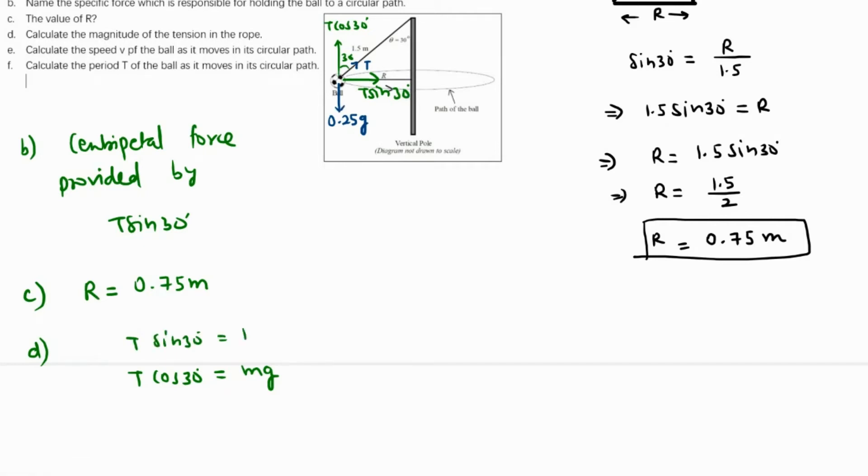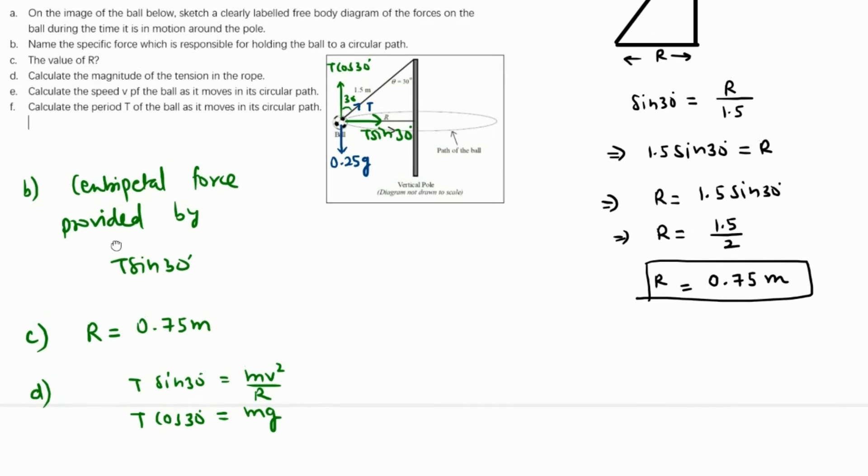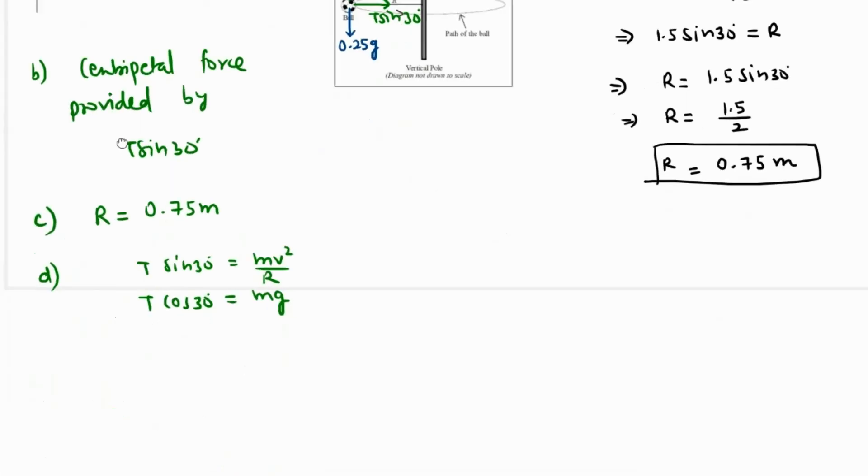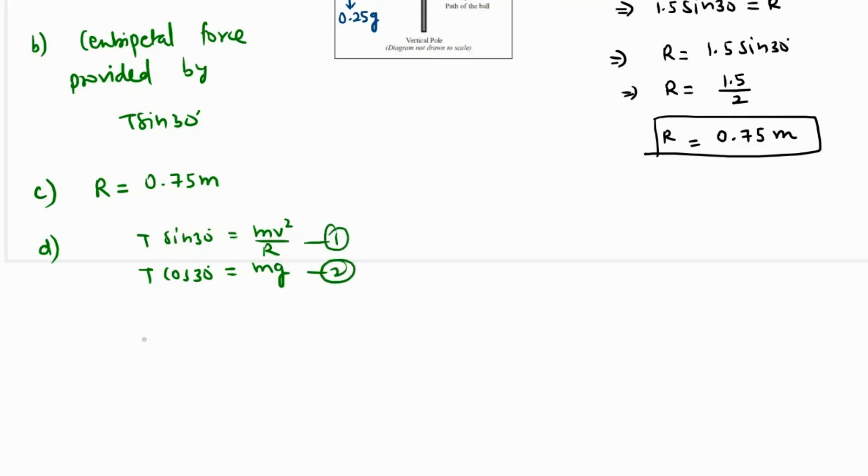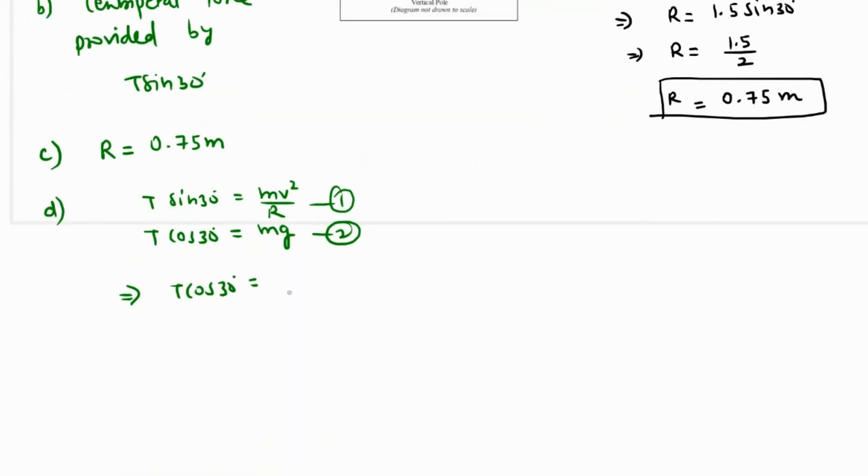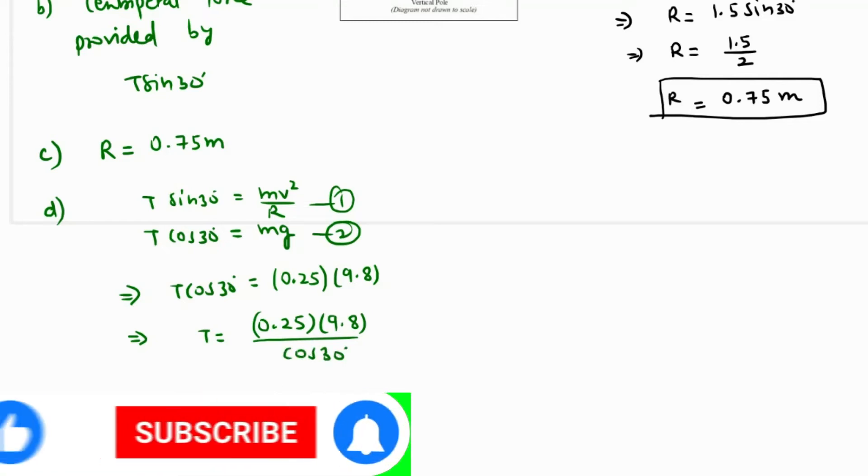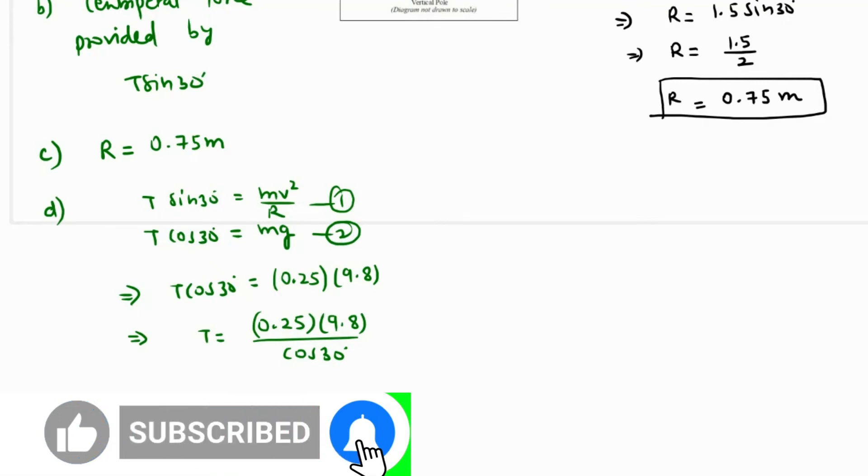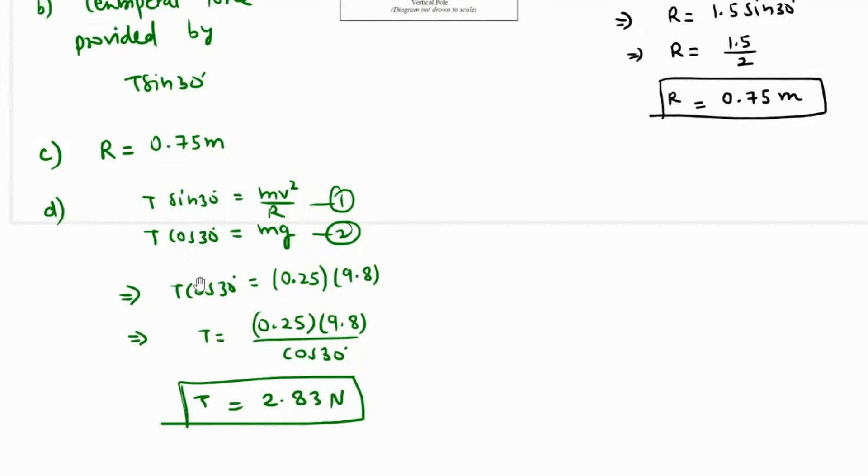We know the mass and g, so from equation two we can get the value of T. T cos 30 equals the mass which is 0.25 kilograms times 9.8. So the value of T is 0.25 times 9.8 over cos 30 degrees, which comes out as 2.83 newtons. This is the value of tension.